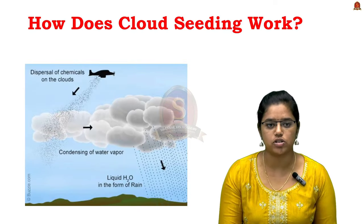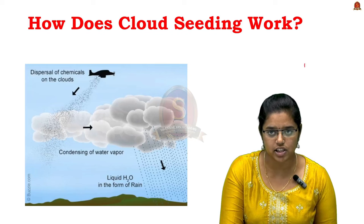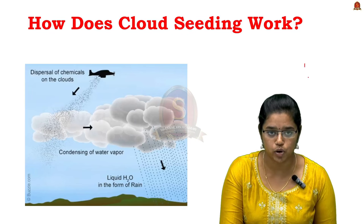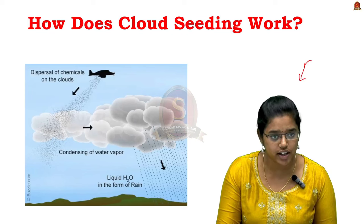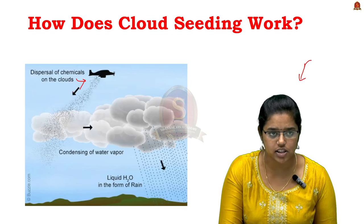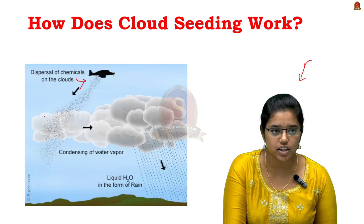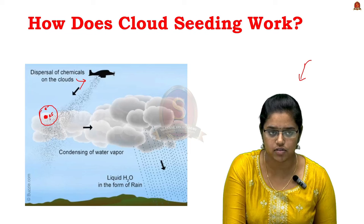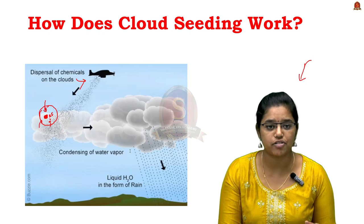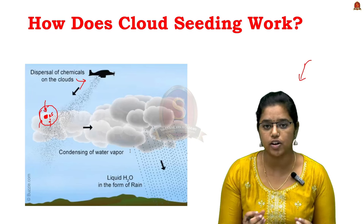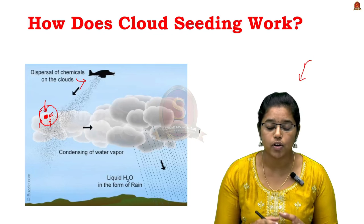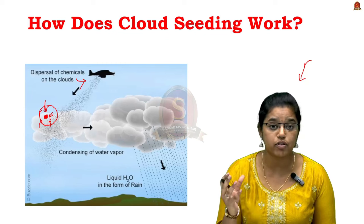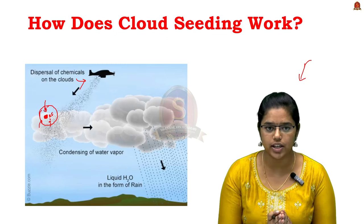How does cloud seeding work? First is the injection of chemicals. Chemicals such as potassium iodide, silver iodide, and sodium chloride are dispersed into the clouds using a ground generator or aeroplanes. These chemicals act as condensation nuclei — similar to how atomic nuclei have electrons around them, here the water droplets get attached to these nuclei. The chemicals provide a surface for water vapor to condense and form raindrops. Once the nuclei form water droplets, the droplets grow in size until they become heavy enough for rain to fall.